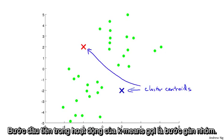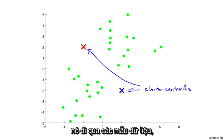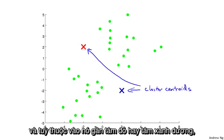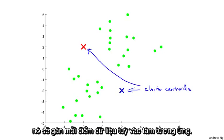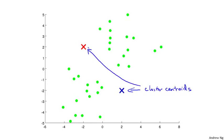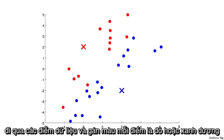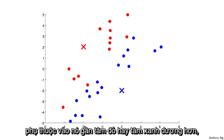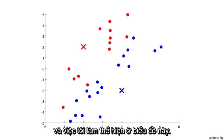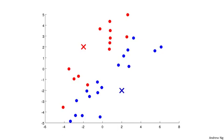The first of the two steps in the inner loop of k-means is the cluster assignment step. What that means is that it's going to go through each of the examples — each of these green dots shown here — and depending on whether it's closer to the red cluster centroid or the blue cluster centroid, it is going to assign each of the data points to one of the two cluster centroids. Specifically, it's going to color each of the points either red or blue, depending on which centroid is closer. That was the cluster assignment step.